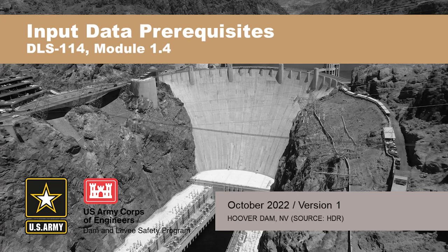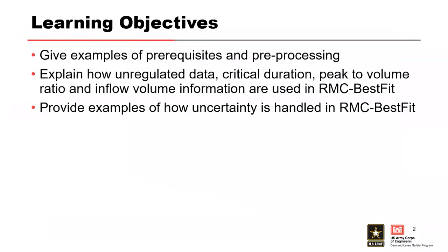This lecture is about input data prerequisites for flow frequency analysis. We'll discuss what kinds of data you need for RMC Best Fit and what pre-processing is required. The learning objectives include: examples of prerequisite data and pre-processing, how unregulated data, critical duration, peak to volume ratio, and inflow volume information are used in RMC Best Fit, and how uncertainty is handled.